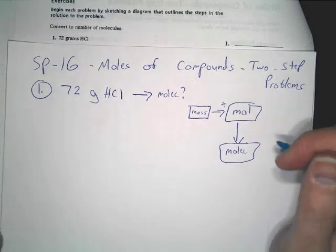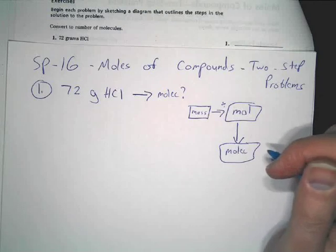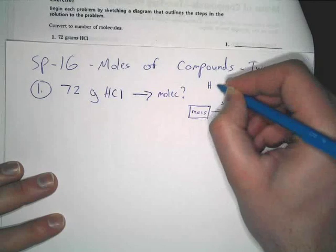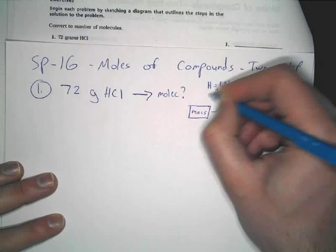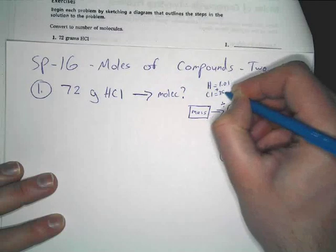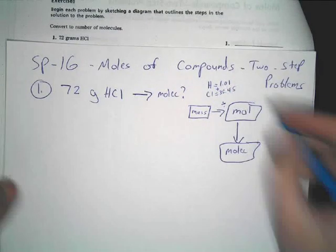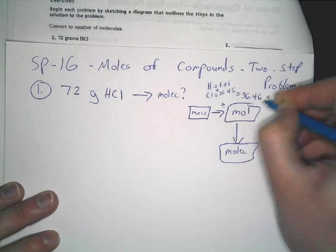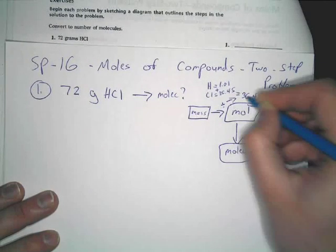Yes. So, chlorine's mass is 35.45, correct? Yes. Okay. Good. So let's just figure this out really quick. You've got H is 1.01 plus Cl, which is 35.45, what does it come out to be? So you're going to divide by that.